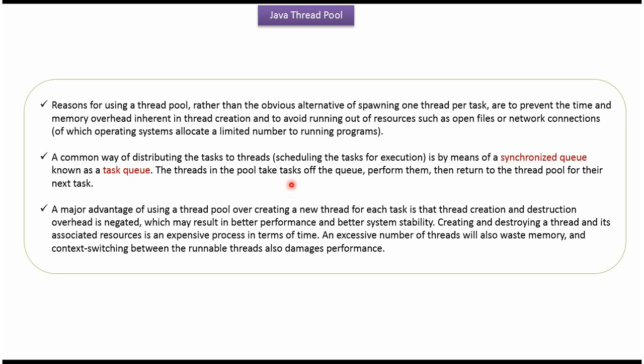A common way of distributing tasks to threads is by means of a synchronized queue, known as a Task Queue. The threads in the pool take tasks off the queue, perform them, and return to the ThreadPool for their next task.